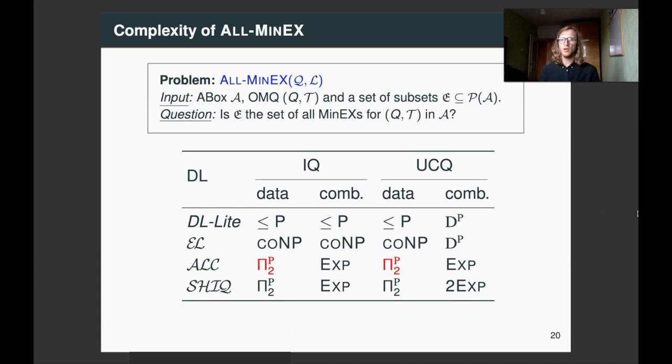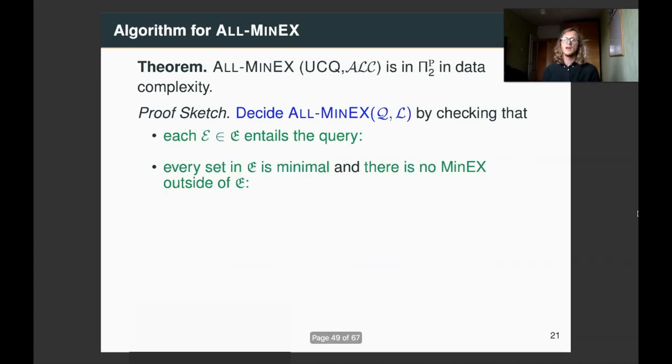Now, we concentrate on all minex, and we show that in ALC, in data complexity, it's Π2P complete, where Π2P is the class of problem solvable with co-NP machine calling an NP oracle. So, first we show membership, that all minex is in Π2P. To decide whether a given set of subsets of the A-box is the set of all minimal explanations, we need to check that each subset entails the query, and that each subset is minimal, and there is no minex outside of this given set of subsets.